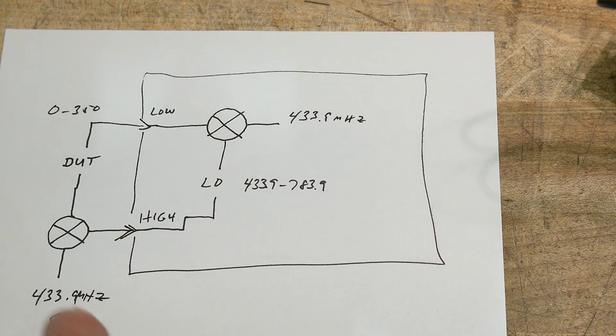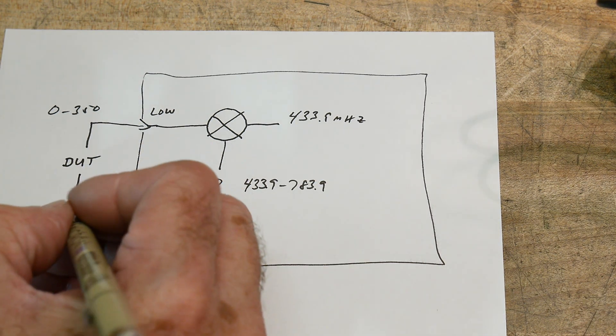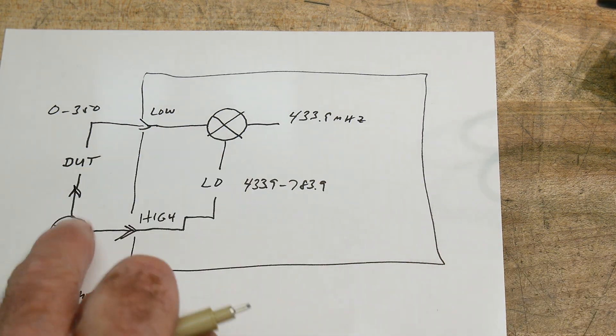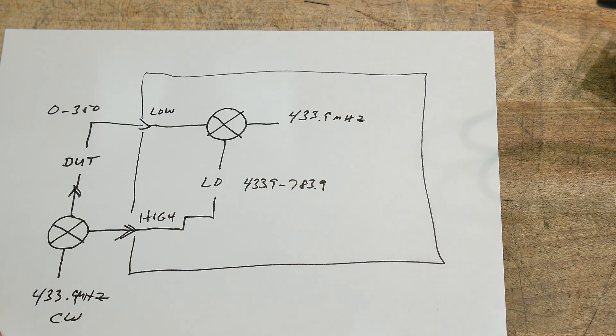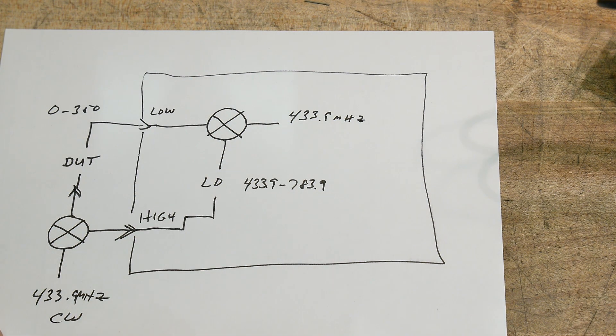So this is a tracking generator. As we sweep, we generate a signal that's exactly the frequency that we're going to be measuring. So this is how you do a tracking generator.